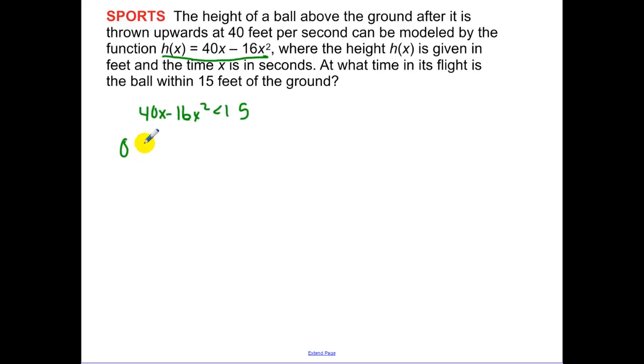So I'm going to set this less than 0 and I'm going to add all this stuff over to the other side. Now that's going to probably take me a really long time to try and solve by factoring. So I'm going to go to the quadratic formula. So opposite of b plus or minus the square root of b squared minus 4ac all over 2a.